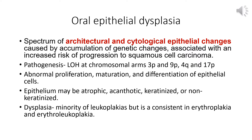The second group — oral epithelial dysplasia — represents a spectrum of architectural and cytological epithelial changes caused by accumulation of genetic abnormalities, associated with increased risk of progression to squamous cell carcinoma. Under ICD classification these have been called low grade and high grade, but WHO recommends a three-tier classification.